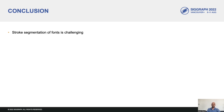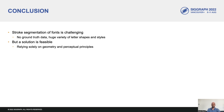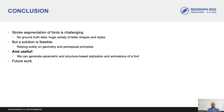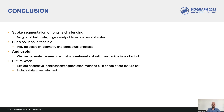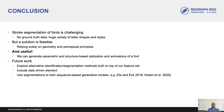To conclude, we have seen how stroke decomposition of fonts is a challenging problem, with a lack of training data and a huge variety of letter shapes and styles that can often lead to ambiguous segmentation hypotheses. But the solution is feasible by relying solely on geometric and perceptual principles, and this solution can be extremely useful to produce a variety of text-based stylizations and animations. In the future, we plan to explore alternative approaches that build on our feature sets — CSFs and junctions — and to include a data-driven element to the junction identification stage. Another interesting avenue is to use our segmentations to train sequence generation methods such as SketchRNN or others. Thanks for your attention.